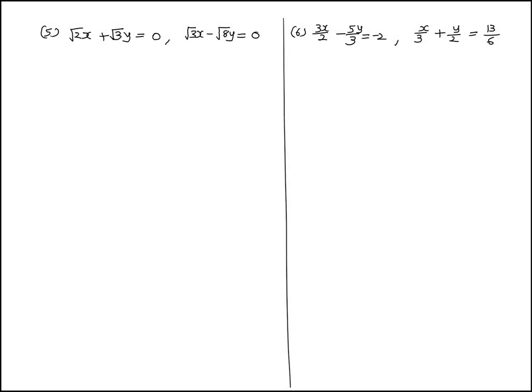Now we start exercise 3.3, question number 1, subquestion number 5. The first equation is root 2 into x plus root 3 into y equal to 0 (equation 1). The second equation is root 3 x minus root 8 y equal to 0 (equation 2).